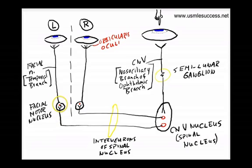From our facial motor nucleus, a signal is sent up through the facial nerve, specifically through the temporal branch of the facial nerve or cranial nerve seven. This is going to a muscle in both eyes known as the orbicularis oculi.